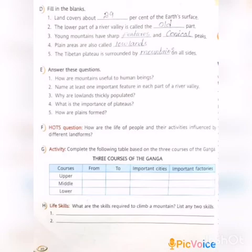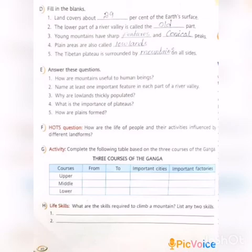Third question: Young mountains have sharp, blank and blank peaks. Answer: Young mountains have sharp features (F-E-A-T-U-R-E-S) and conical (C-O-N-I-C-A-L) peaks. Fourth question: Plain areas are also called blank. Answer is Lowlands (L-O-W-L-A-N-D-S).